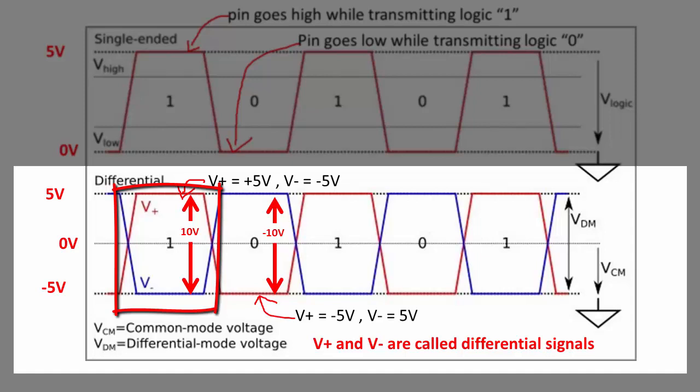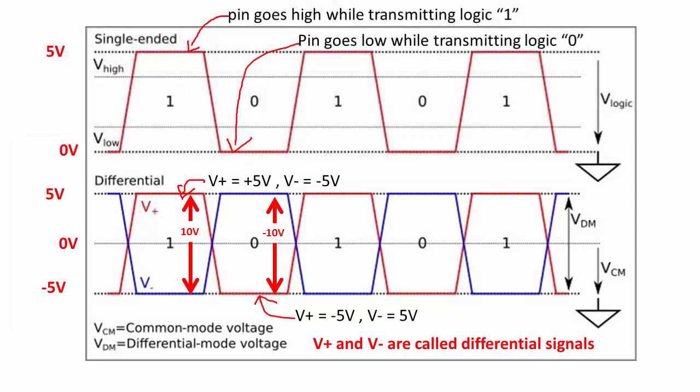That happens to be +10 volts, which is considered logic one by the receiver. Even if noise is added to this signaling, the noise gets added equally to both signals. The receiver considers the difference, so noise cancelling happens automatically. That is the biggest advantage of differential signaling.